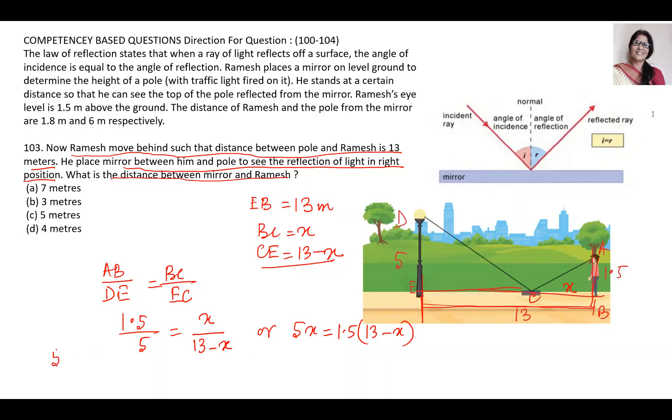Or 5X plus 1.5X is equal to 19.5. So 6.5X is equal to 19.5, which gives X equal to 19.5 upon 6.5.